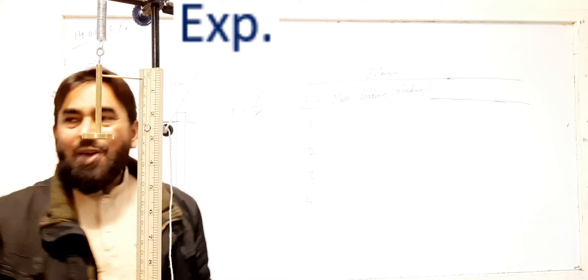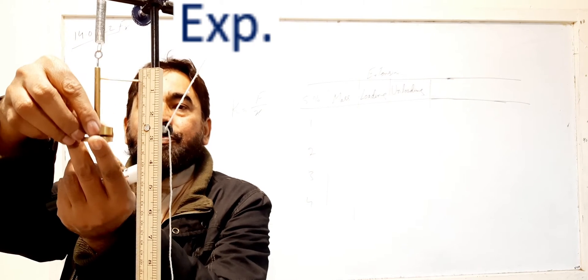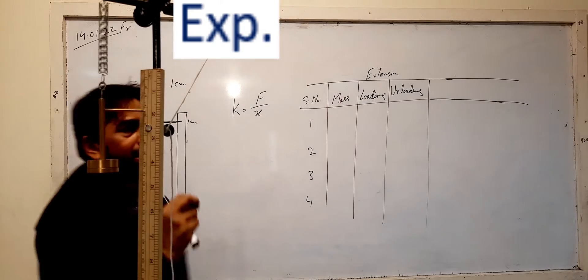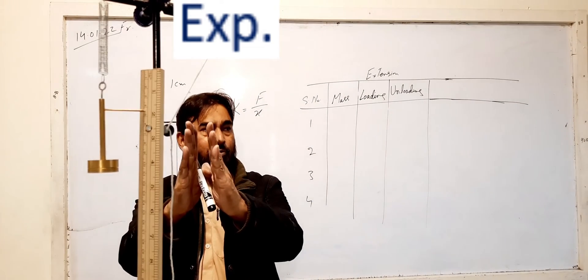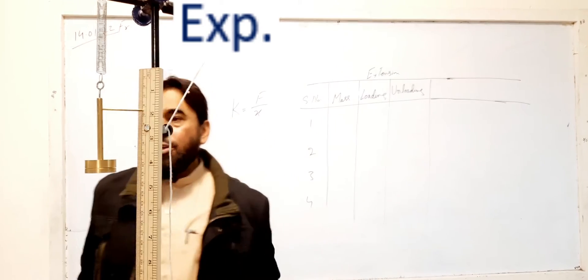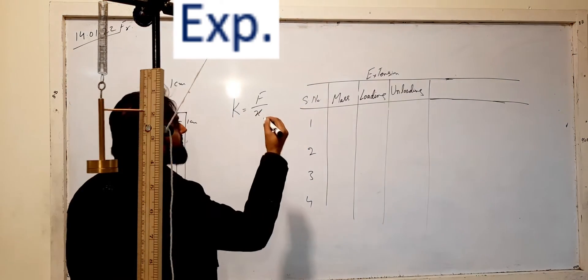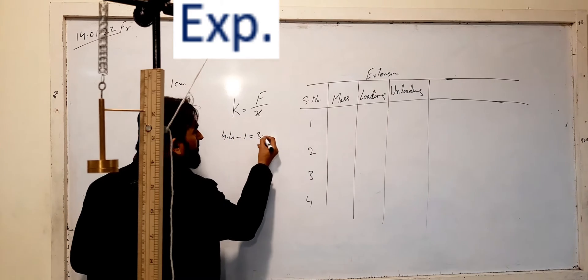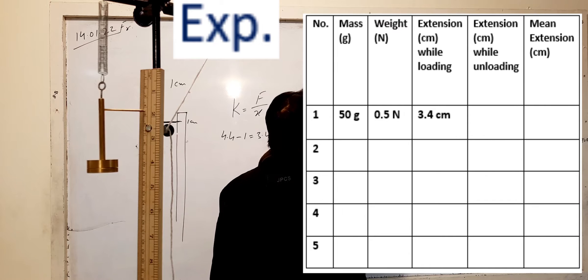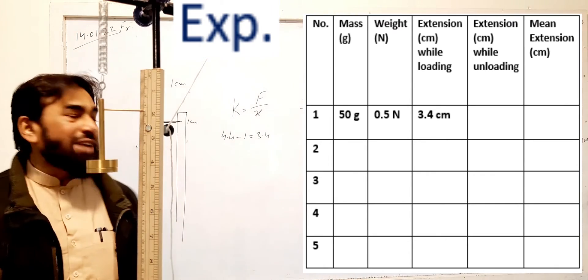Now I am suspending a 50-gram mass. There must be no parallax error — you must observe the reading from eye level, not from above or below. The reading here is 4.4 centimeters. From that I subtract one centimeter: 4.4 minus 1 equals 3.4. So with 50 grams suspended, I got an extension of 3.4 centimeters.